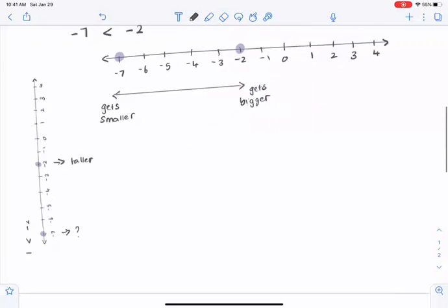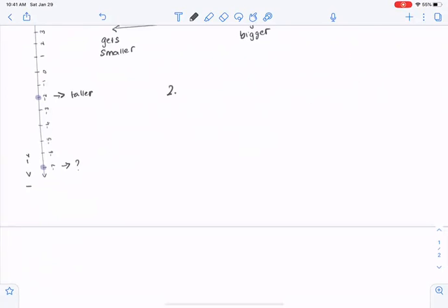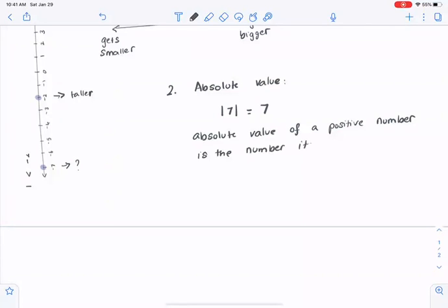Another concept that you've got to keep in mind is the concept of absolute value. If we take the absolute value, which is we are putting a number within those enclosed bars, an absolute value of a positive number is the number itself.